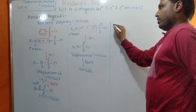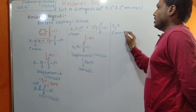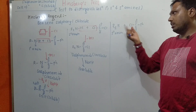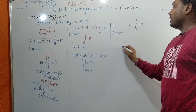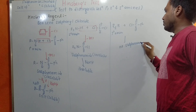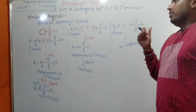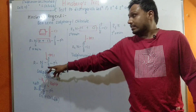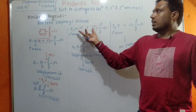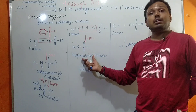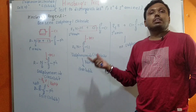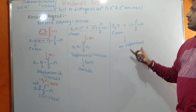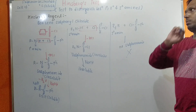For tertiary amine, the general representation is R₃N. When it reacts with benzene sulfonyl chloride, since there is no N-H bond, there is no point of HCl formation, and therefore no sulfonamide formation. No sulfonamide is formed — that is the observation for tertiary amine.